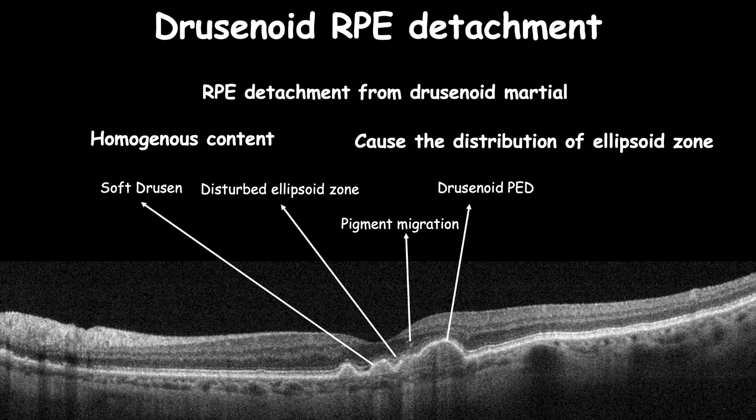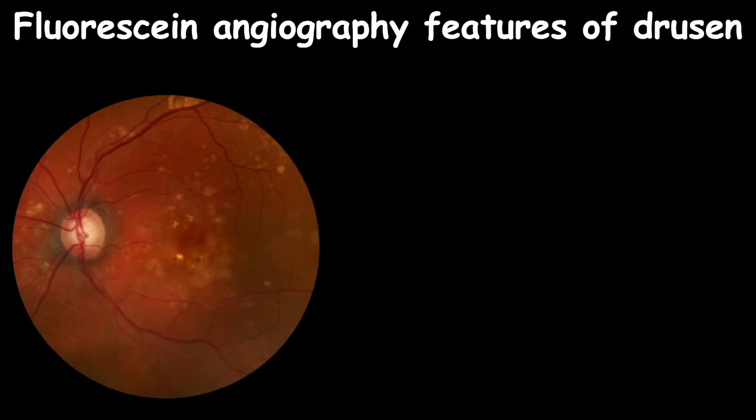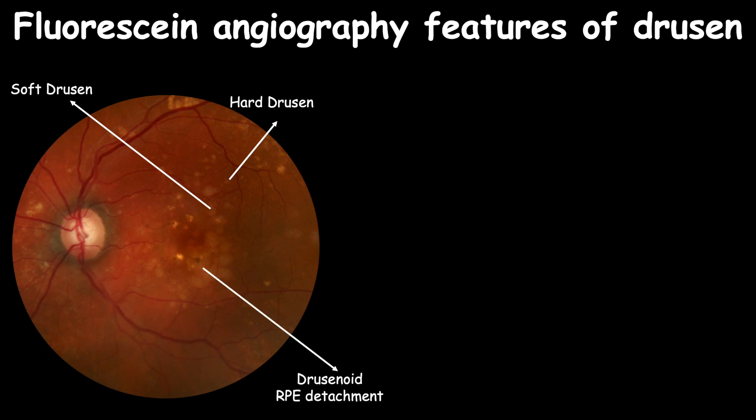Drusen can differ in location — they can be located in the optic disc, forming optic disc drusen, at the macula, or in the periphery. This case contains hard drusen, soft drusen, drusenoid RPE detachment, and intraretinal pigmentation.